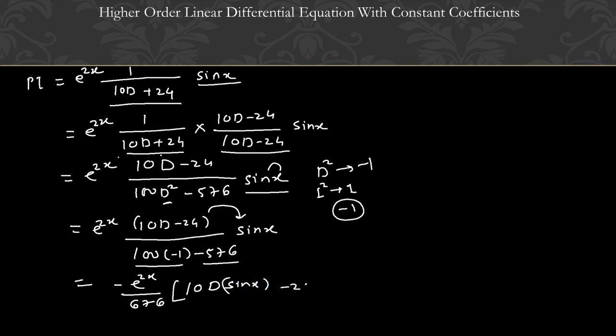Multiplying the numerator by minus, we get 10D sin x minus 24 sin x. So PI can be written as PI equals e to the power 2x upon 676. D stands for derivative with respect to x. Sin derivative is cos. So 10 times cos x minus 24 sin x. This is the final PI.